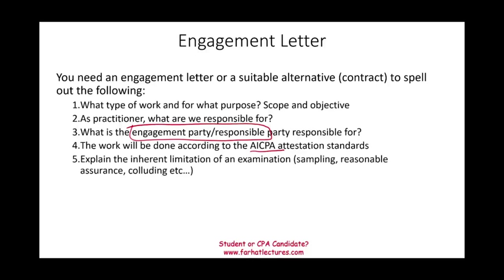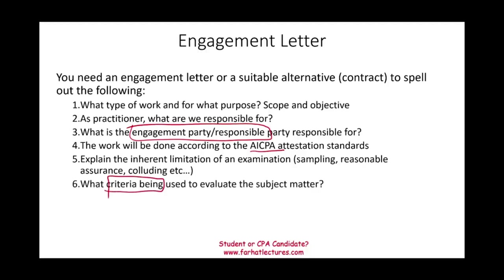The work that will be done according to the AICPA must be spelled out — we have to follow the AICPA attestation standards and state this in the letter. We also have to explain the inherent risk, just like with an audit report. At the end of the day, we have to let the client know that there's always inherent limitation because we sample and we're only providing reasonable assurance. There could be some collusion. We also need to specify what criteria are being used — the measurement stick for evaluating the subject matter.